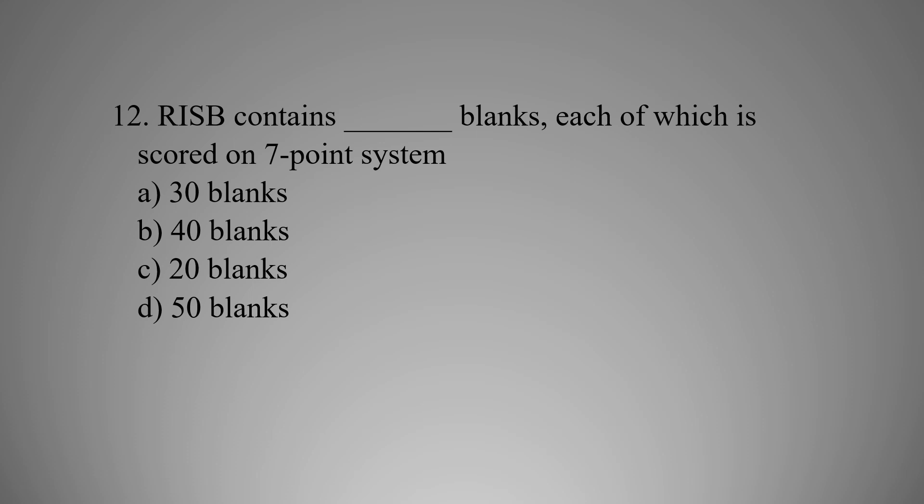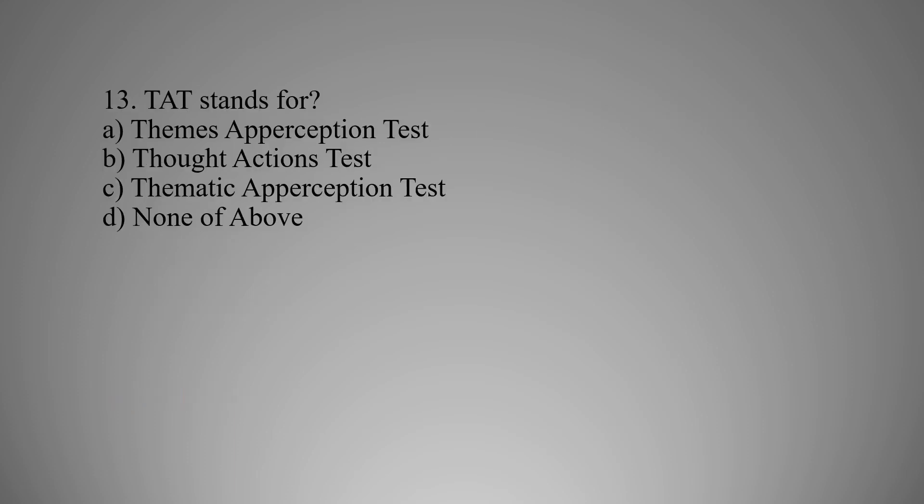MCQ number twelve: The RISB contains how many blanks, each of which is scored on a seven-point system? Option A: 30 blanks, Option B: 40 blanks, Option C: 20 blanks, Option D: 50 blanks. The right option is B — 40 blanks.